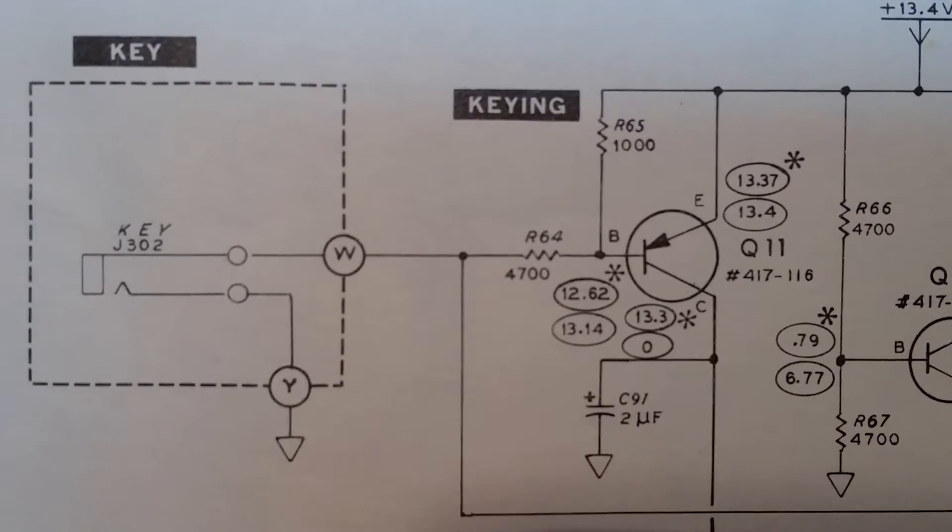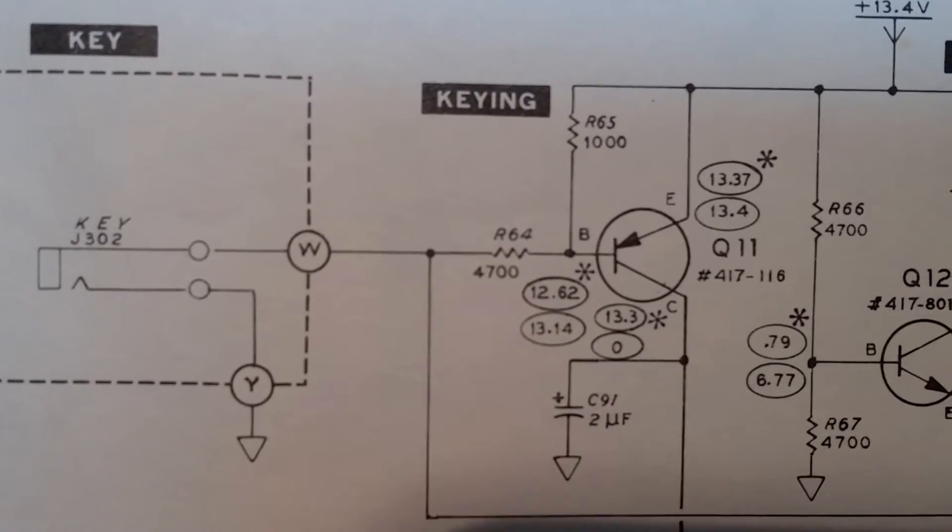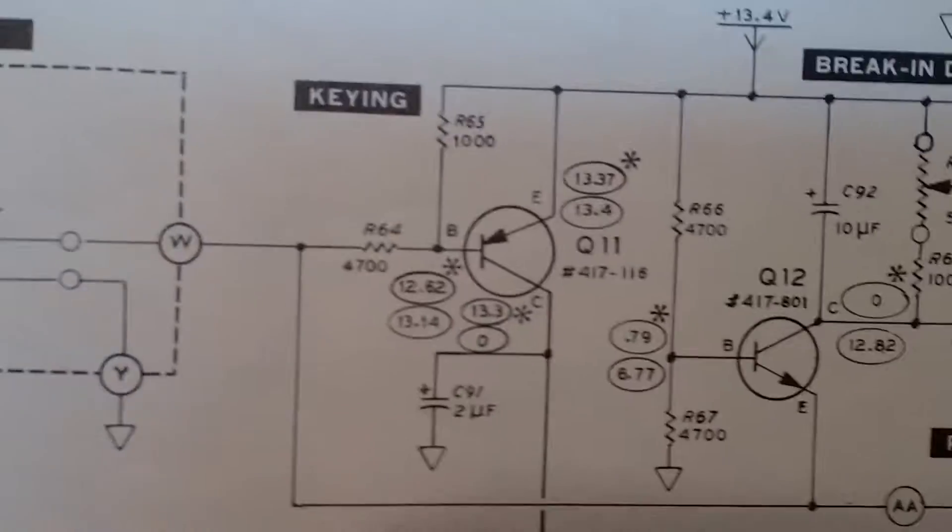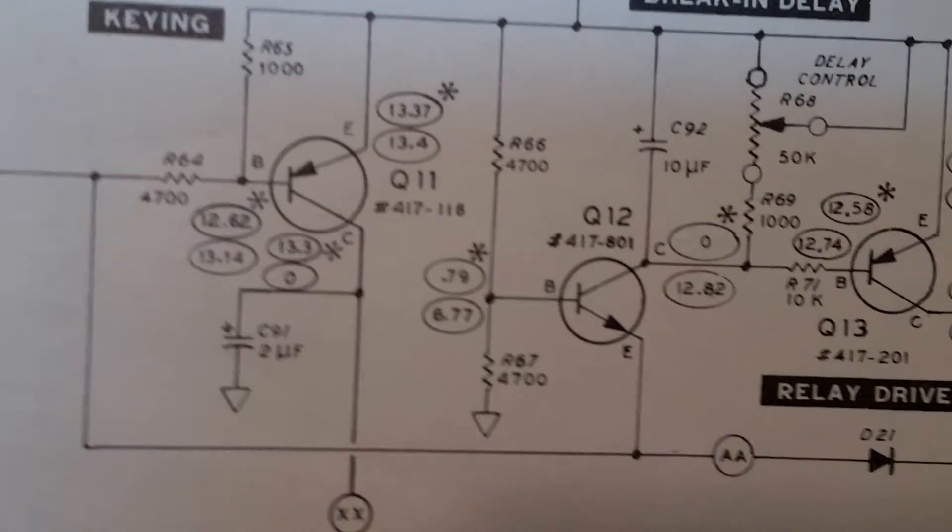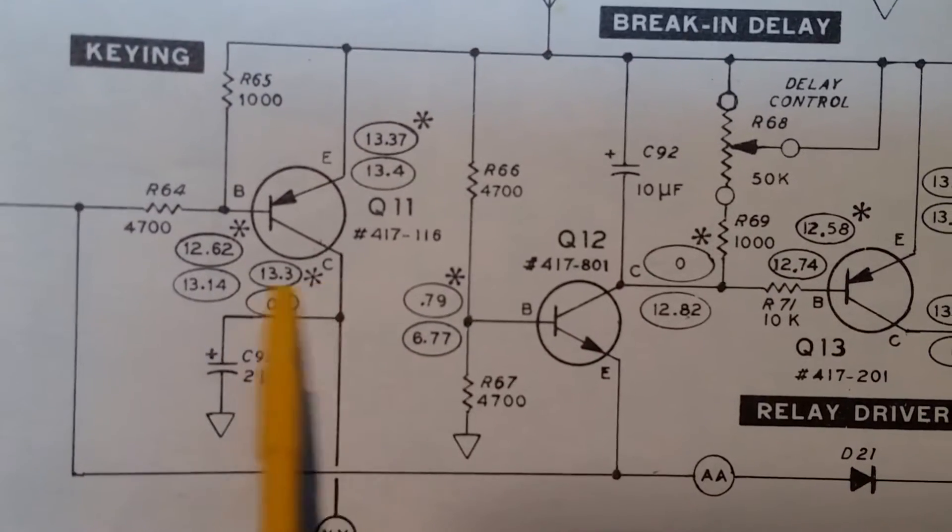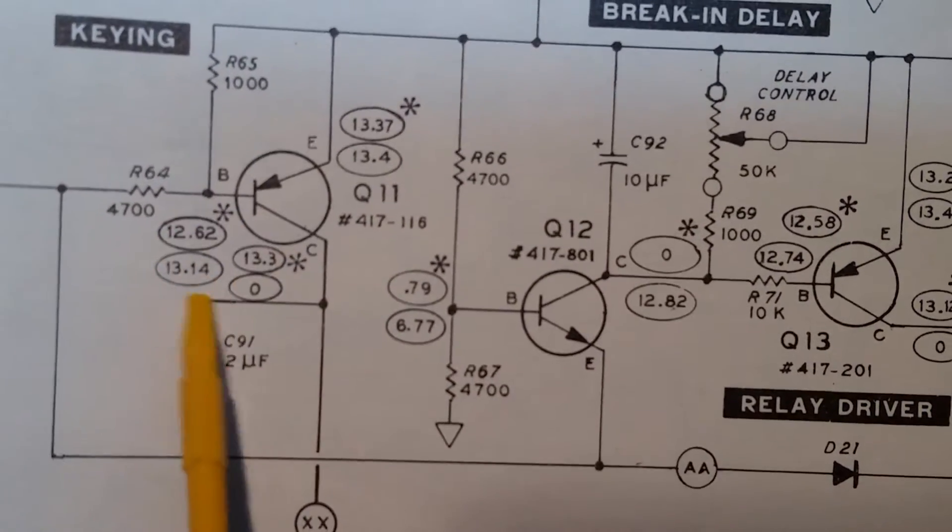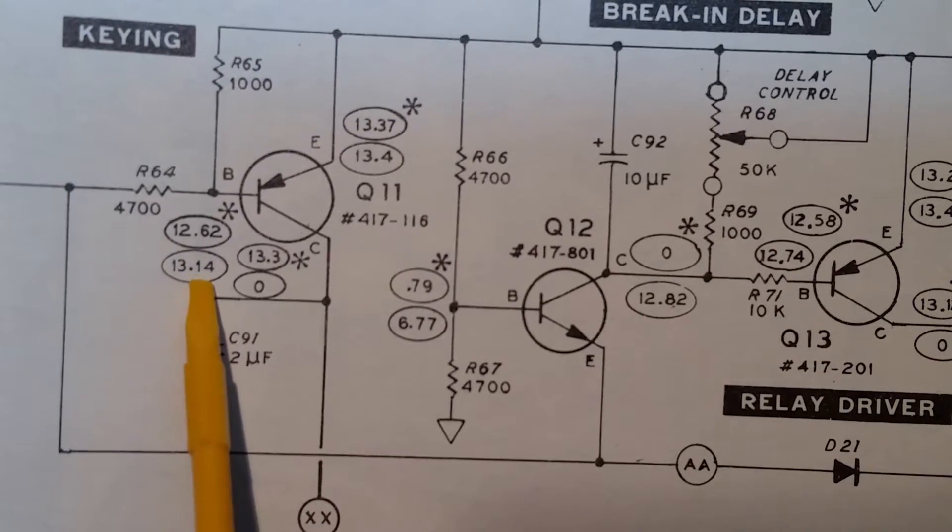So what I did, I started following here where the key enters the transceiver. I started to measure all the voltages here. With a star is TX. With no star is RX.